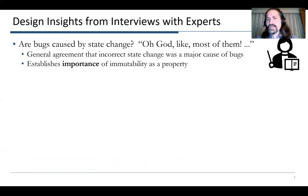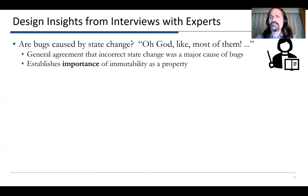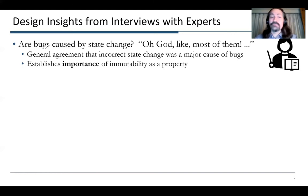To explore this, we looked at getting some design insights based on interviews with experts. The first question we asked was: are bugs caused by state change? The answer we got from one of our expert interviews was, 'Oh God, like most of them.' So maybe this is preaching to the choir if some of you are fans of functional programming, but there definitely was agreement among the experts we interviewed that incorrect state change was a major cause of bugs. This really established the importance of immutability as a property.